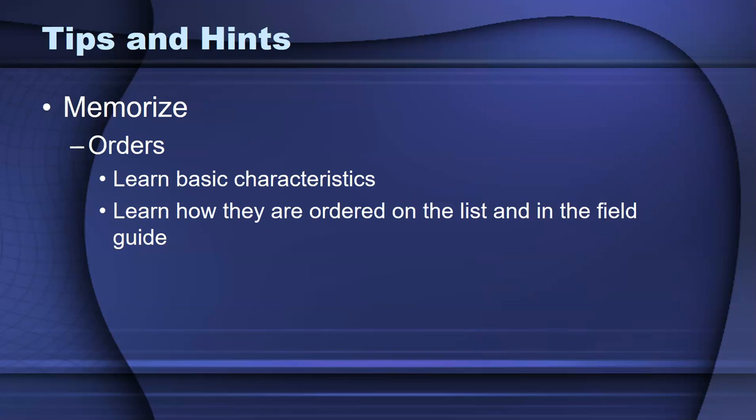Definitely memorize at the order level. If the students know the basic characteristics of each order that's on the list, that will really help them to narrow down, when they see a specimen or an image, what area they're looking for. And that can help them find entries on the list and in the field guide a lot faster. Flashcards about each order would be beneficial.